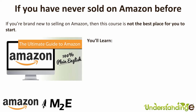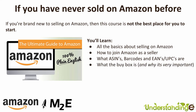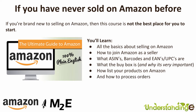We have the Ultimate Guide to Amazon course, where you'll learn all about the basics of selling on Amazon — how to set up an Amazon account if you don't already have one, what an ASIN is (ASINs are just like barcodes and EANs but Amazon's version), why the buy box is really important, how to list your products onto Amazon, and also how to process orders.